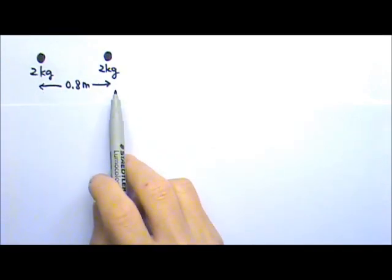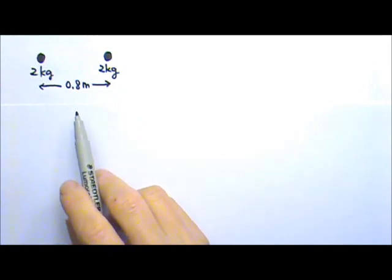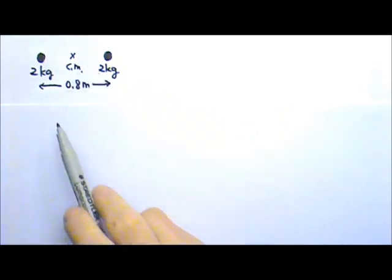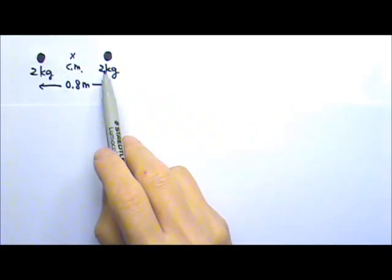In this case, we have symmetry, so the center of mass is simply right in the middle, 0.4 meters from each of the two kilograms.